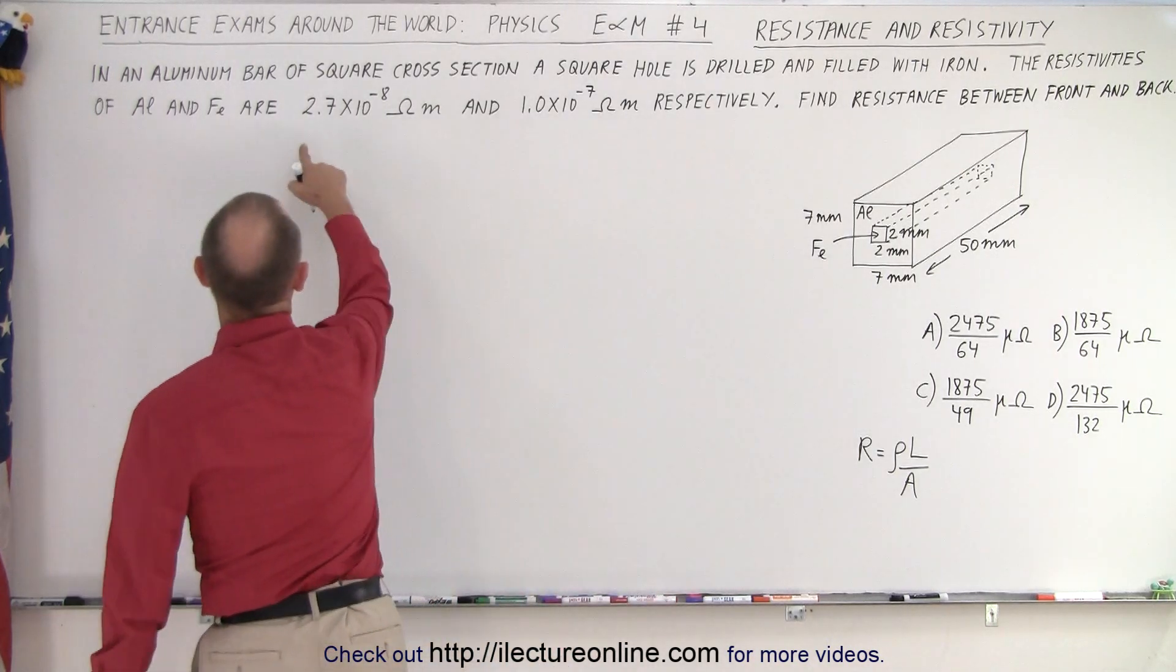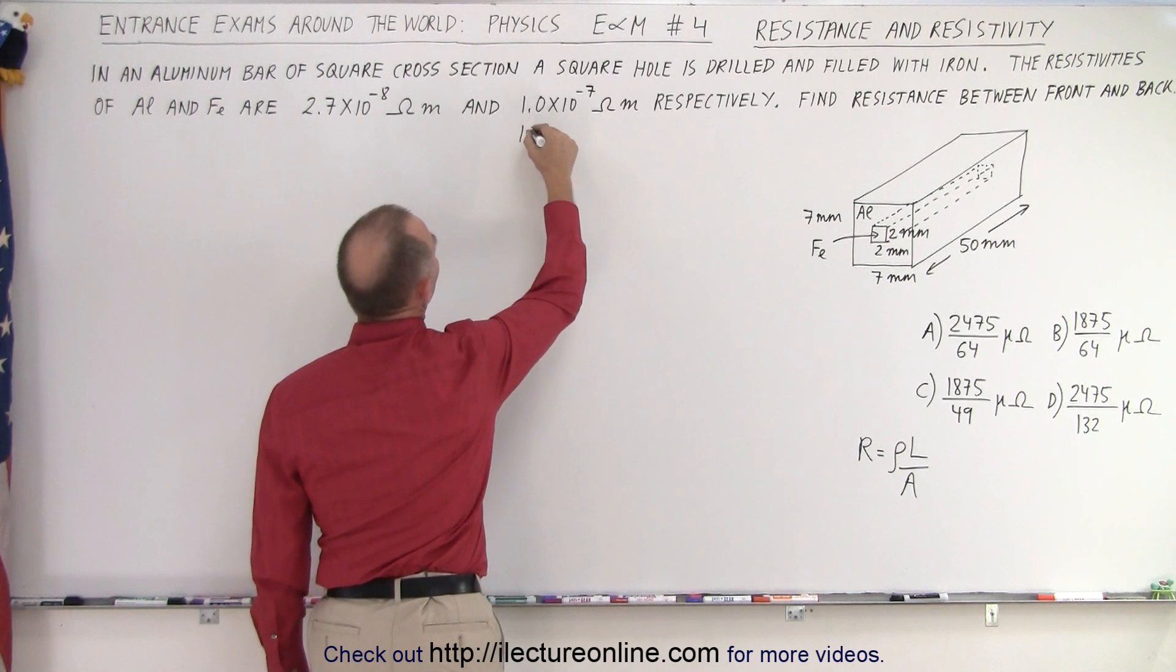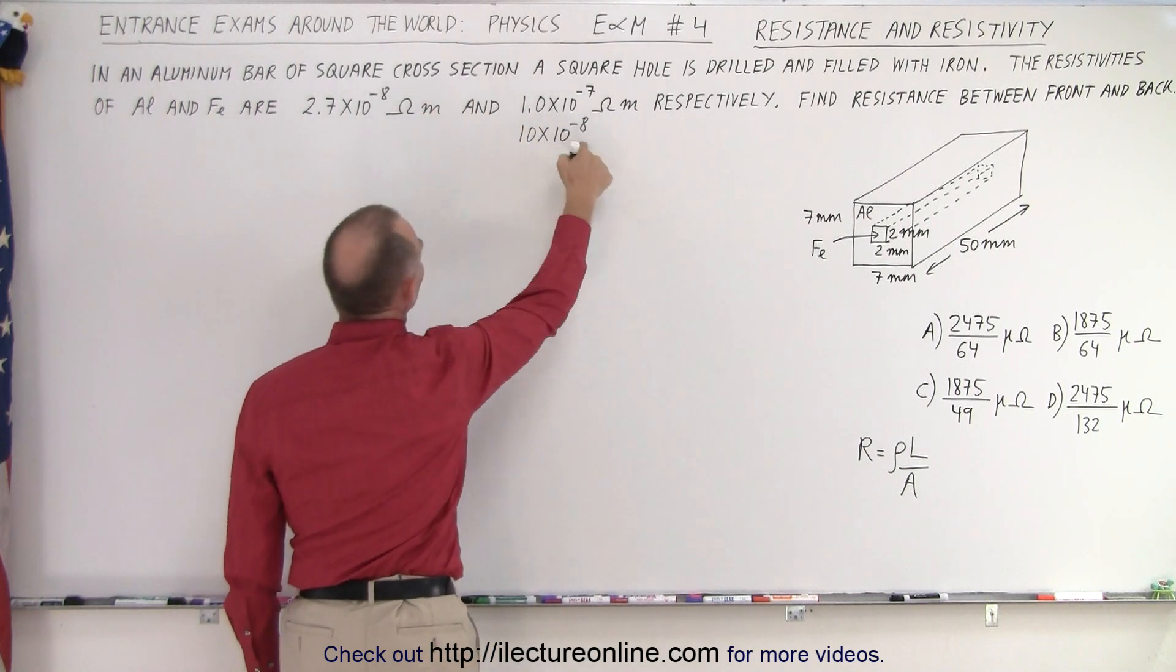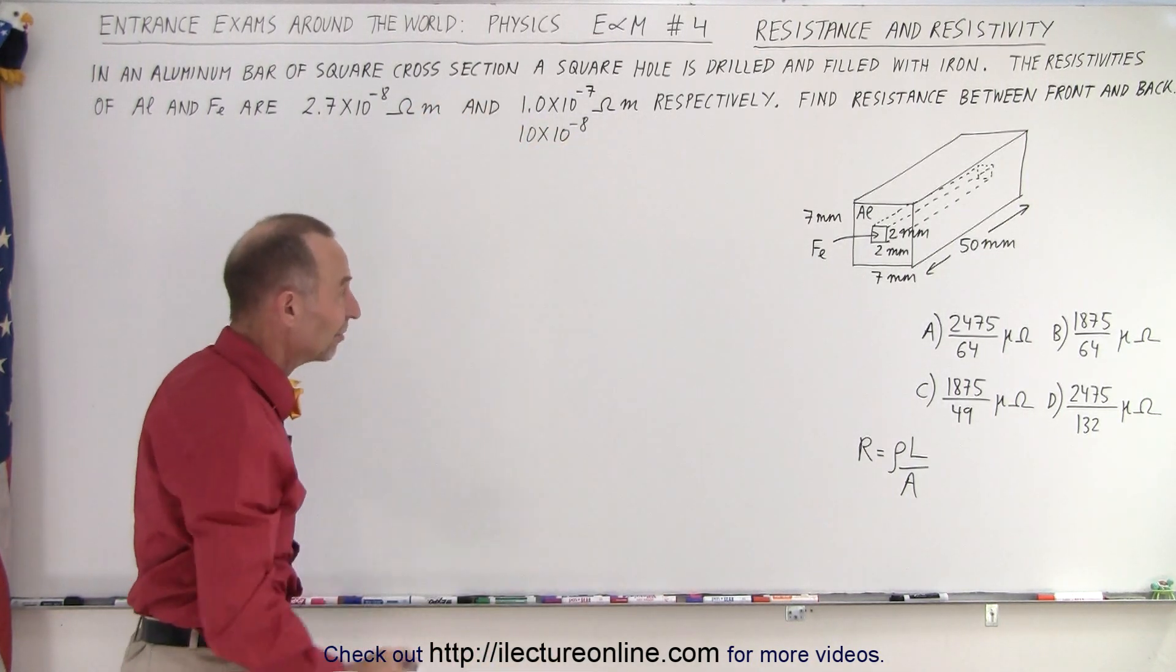Now when we look at these, right away we want to change this one to 10 times 10 to the minus 8 so that the exponent is the same. It's a lot easier to work with when the exponents are the same so you don't get messed up there.